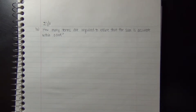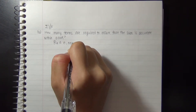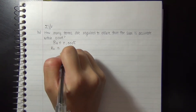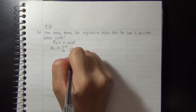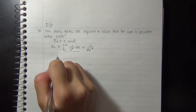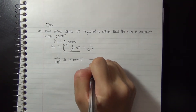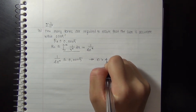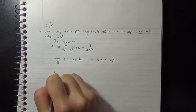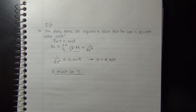Using the same series 1/n^5, we'll solve how many terms are required to ensure that the sum is accurate within 0.0005. We set 1/(4n^4) ≤ 0.0005, then solve: 4n^4 ≥ 1/0.0005 = 2000, so n^4 ≥ 500, giving n ≥ 4.729. Therefore, n must be at least 5 to ensure the sum is accurate within 0.0005.